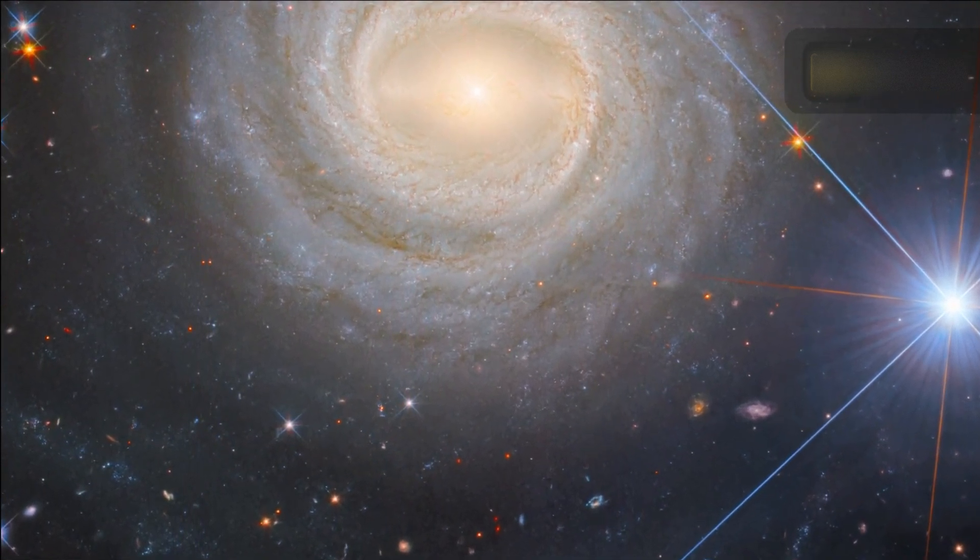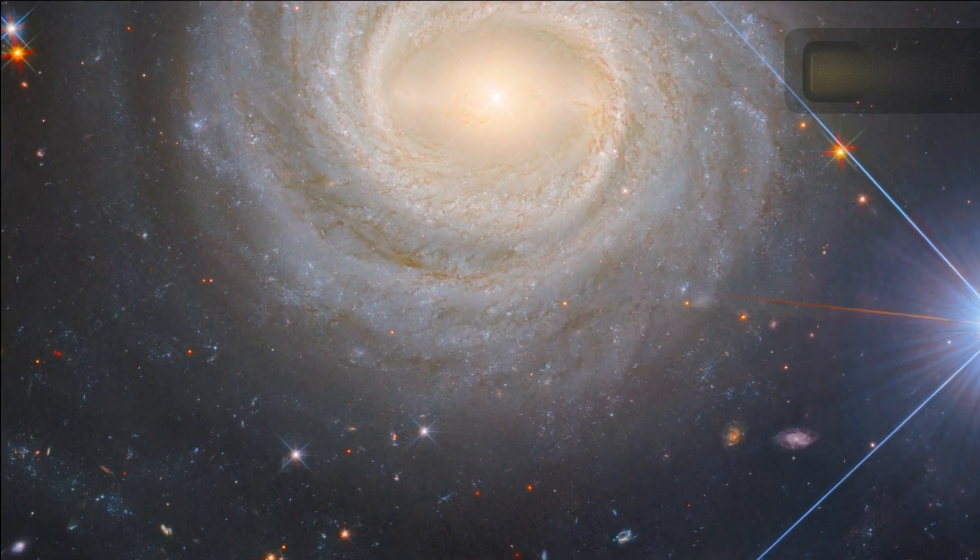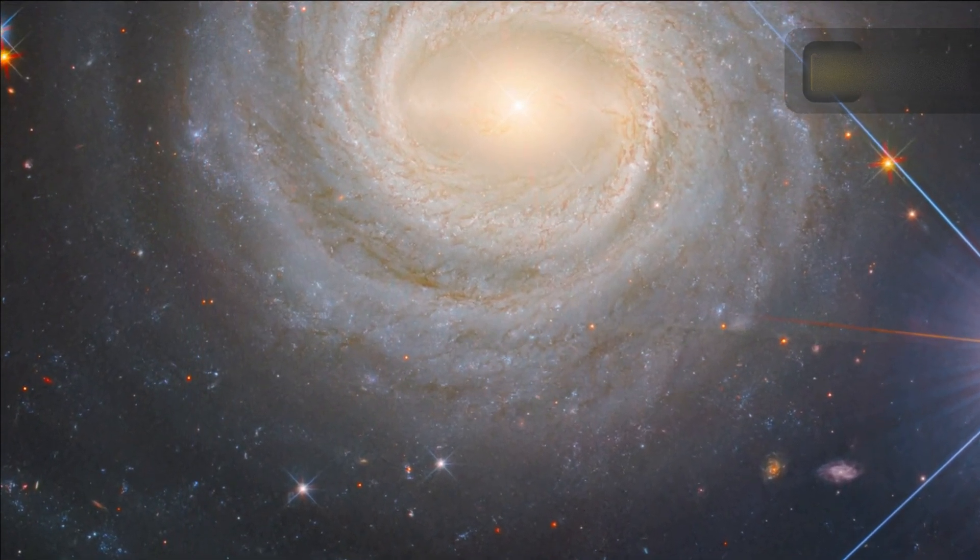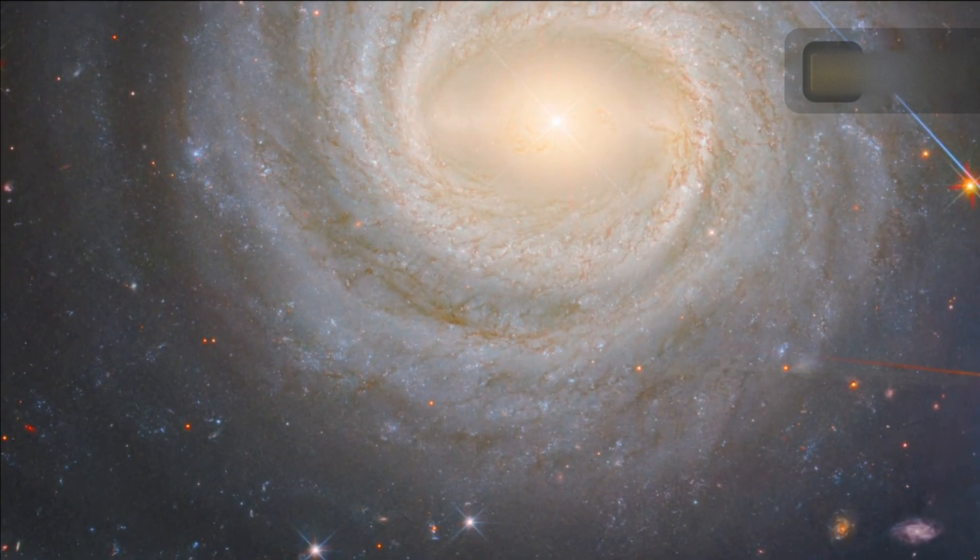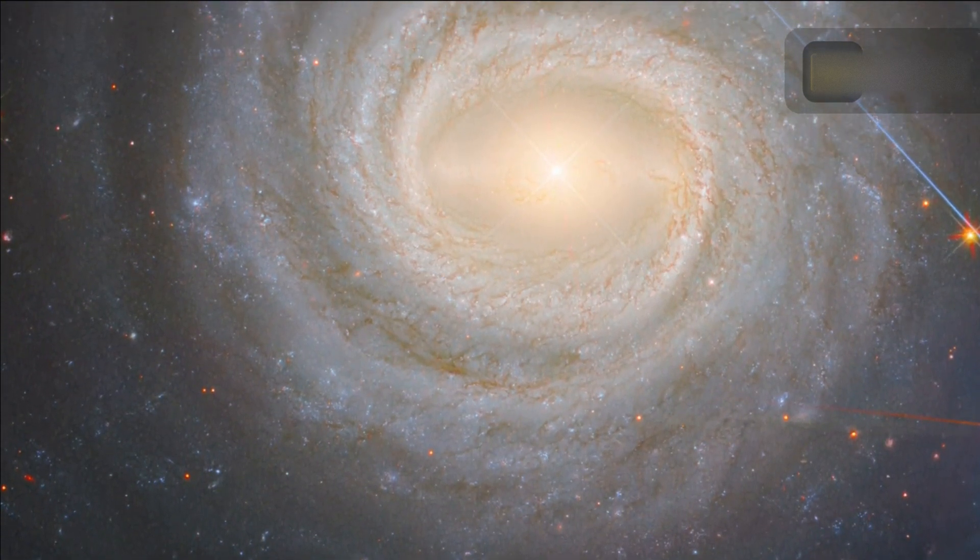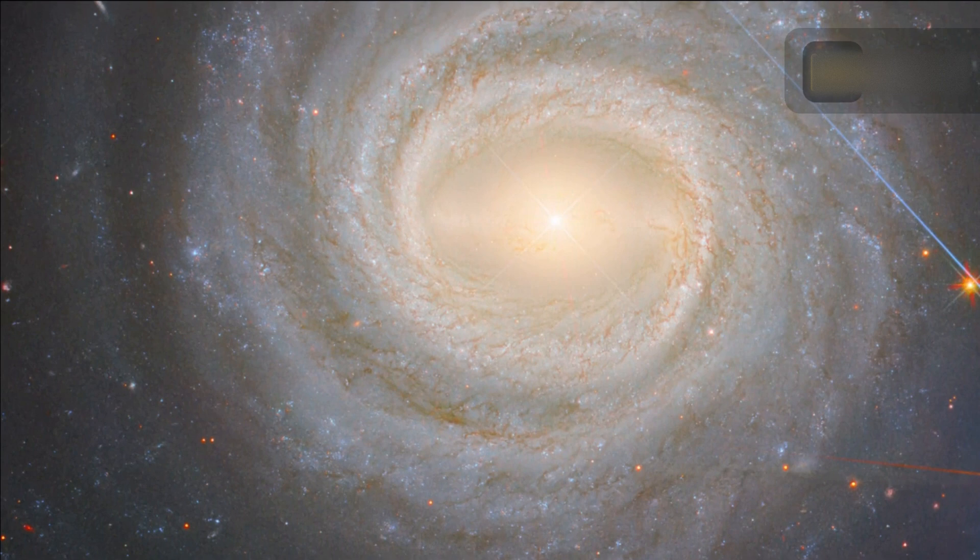The Milky Way is actually part of a galaxy group, known as the Local Group, which contains two other large galaxies, Andromeda and the Triangulum Galaxy, as well as several dozen satellite and dwarf galaxies.